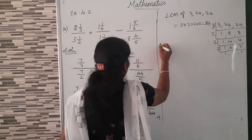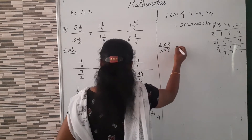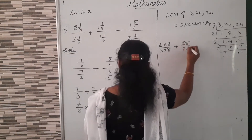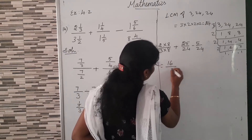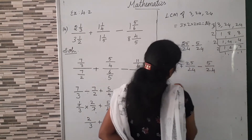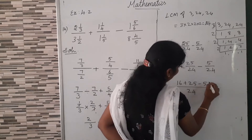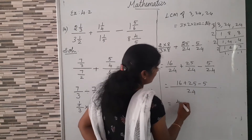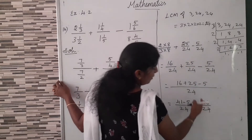Now we can write. 2/3 into 8 — 3 eights are 24, so we multiply by 8. Plus here we already have 24, so no need to change anything. So 25/24 minus 5/24. Now we have the same denominator. So 8 twos are 16, by 24. Plus 25/24, minus 5/24. Now we take the common denominator, which is 24. 16 plus 25 is 41. 41 minus 5 divided by 24 equals 36/24.